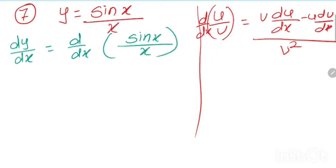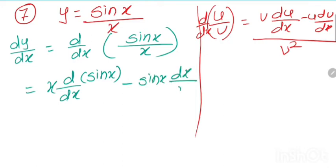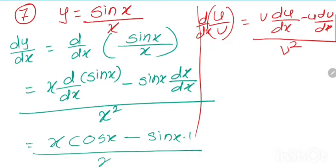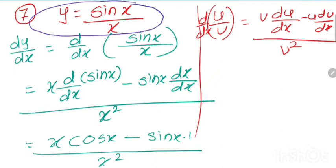Applying the formula to d by dx of sin x divided by x: x times derivative of sin x minus sin x times derivative of x, all divided by x square. The derivative of sin x is cos x and dx by dx is 1. So the answer is x cos x minus sin x divided by x square.